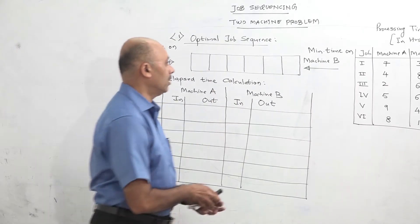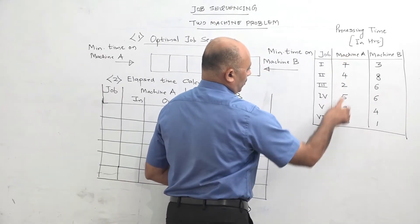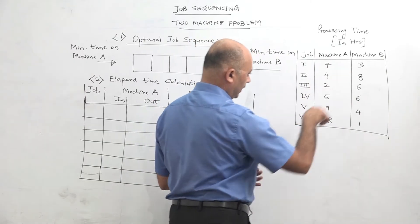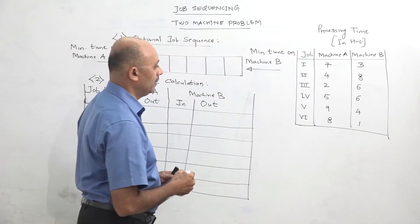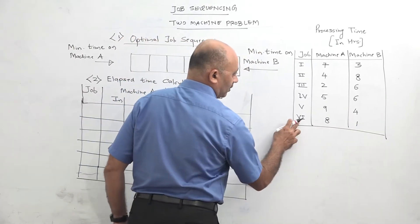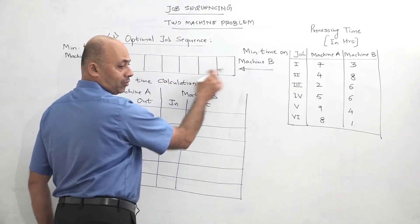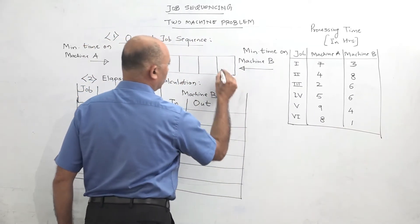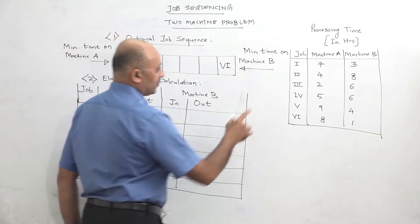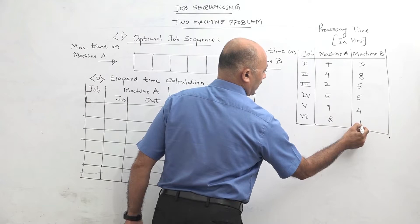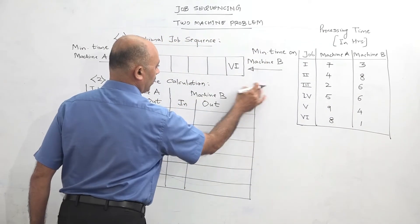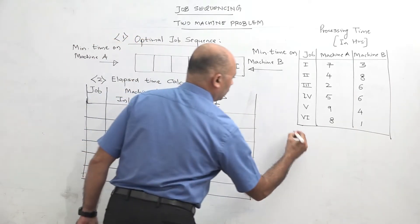Now compare all the times of the jobs. On machine A, minimum time is 2. On machine B, minimum time is 1. So in the entire table, the minimum time is 1. That is job number 6, and that time is on machine B, so allocation will be from the right hand side. So job 6 we will write here from the right hand side. Now job 6 is over.